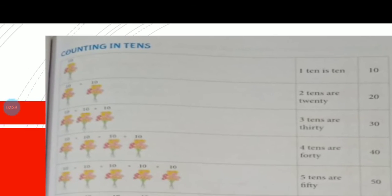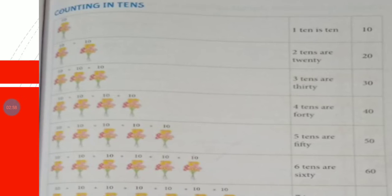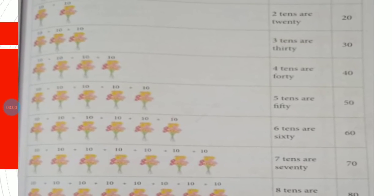Counting in tens: here we have one bunch of ten flowers, so one ten is ten. If we have two bunches, it will become twenty. Two tens are twenty. Same way, there are three bunches with ten flowers each. Three tens are thirty.